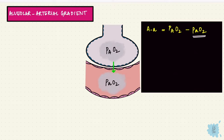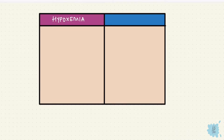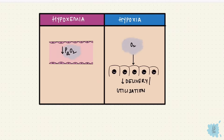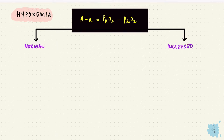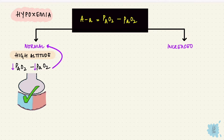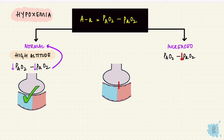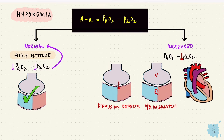When does this gradient increase? When arterial oxygen is lower than alveolar oxygen. This can happen in some cases of hypoxemia — low arterial oxygen — as distinct from hypoxia, where there's reduced oxygen delivery or utilization by tissues. In hypoxemia, the AA gradient can be normal or increased. Normal is seen at high altitude, where both alveolar and arterial oxygen are low with an equal drop, because diffusion is fine. The AA gradient increases when there's normal alveolar oxygen but low arterial oxygen, indicating poor blood oxygenation. This occurs with diffusion defects, ventilation-perfusion mismatch, and right-to-left cardiac shunts.